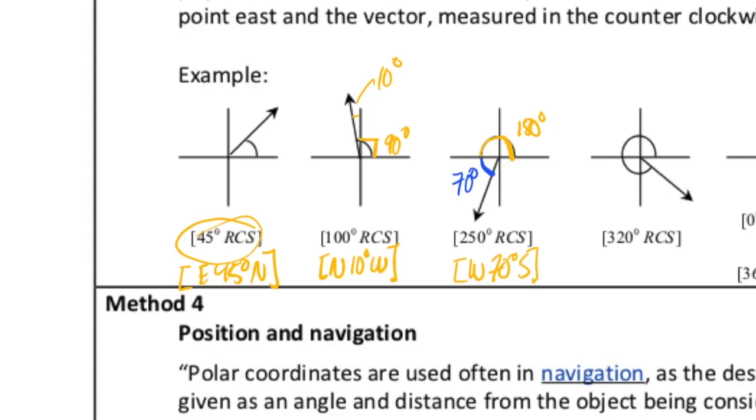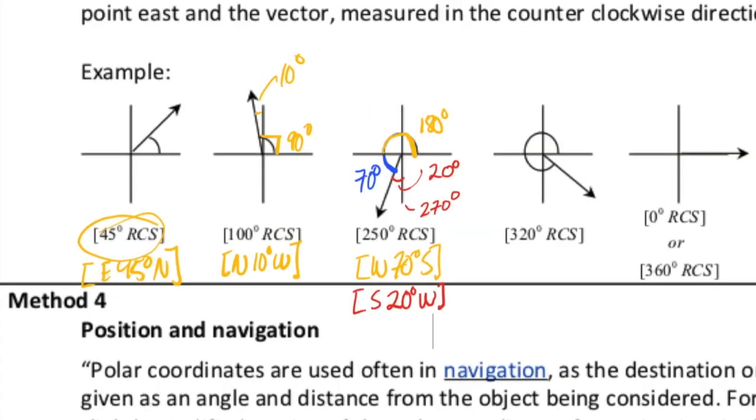Now, we could have looked at it another way, is we could realize that this point over here is 270 degrees. So, this little bit here, that would be 20 degrees. Alternatively, we could have said south 20 degrees west, and so on and so forth.